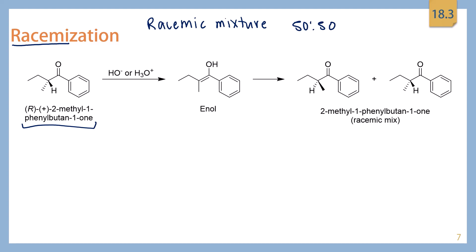You may be wondering how that works. Our initial compound — the R form in this case — has an sp3 hybridized carbon as the alpha carbon. If it's put into acid or base, it's going to go through the enol or enolate form through tautomerization. These are going back and forth in equilibrium, and when we do that, this carbon becomes an sp2 carbon.